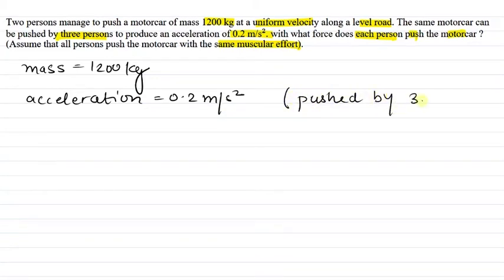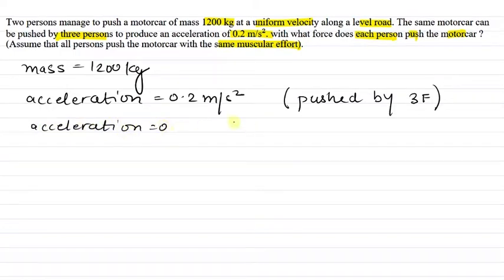I am writing 3f — because if one person applies one force, then three people will apply 3f. And when acceleration was equal to 0, in that case how much force was being applied? It was pushed by 2f. So let's solve this further.